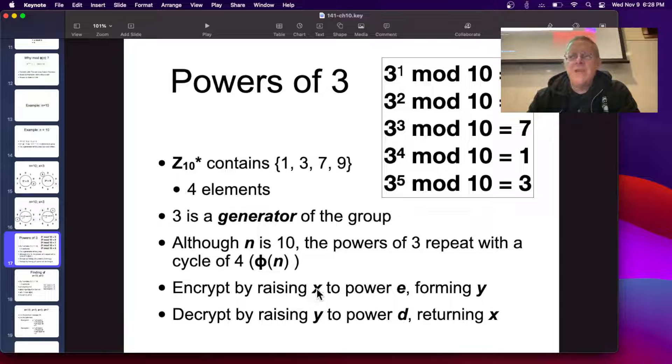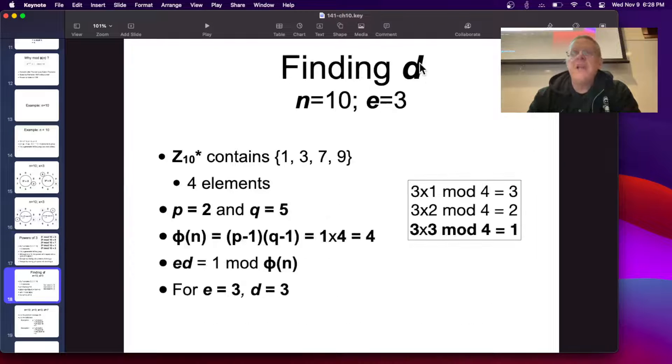So you encrypt by raising a message to the power e, forming y, and you decrypt by raising y to the power d, returning the original plain text x. So we want to find d. And the rule is e times d has to be 1 mod phi, and phi is 4, so 3 times 1 mod 4 is 3, 3 times 2 is 6, mod 4, that's 2, 3 times 3 is 9, that's 1, so 3 times 3 is 1, that means the decryption key is also 3.